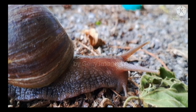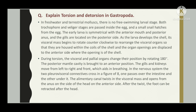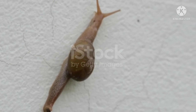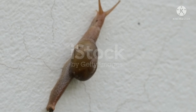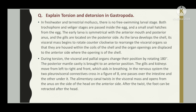As the larva develops, the shell's visceral mass begins to rotate counterclockwise to arrange the visceral organs so that they are housed within the coils of the shell, and the organ openings are displaced to the anterior side where the opening of the shell is.